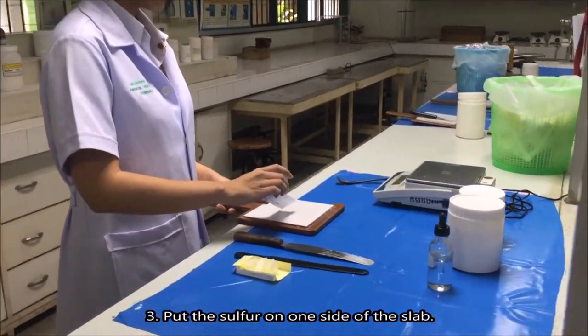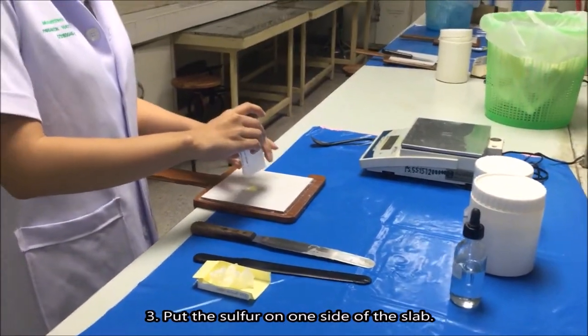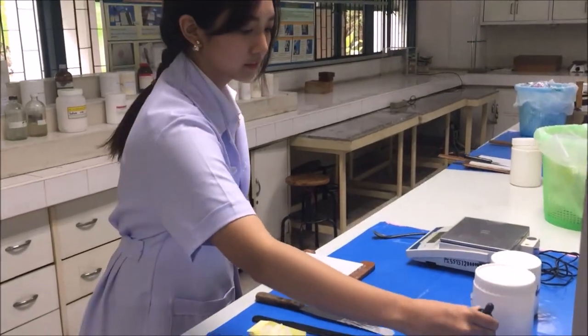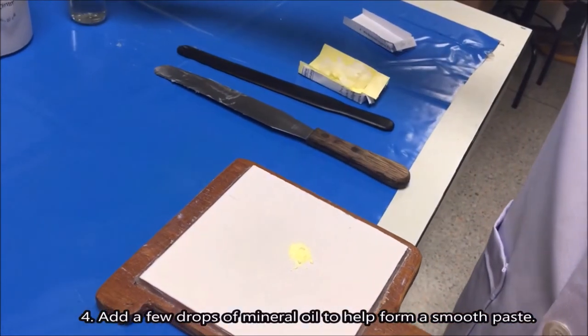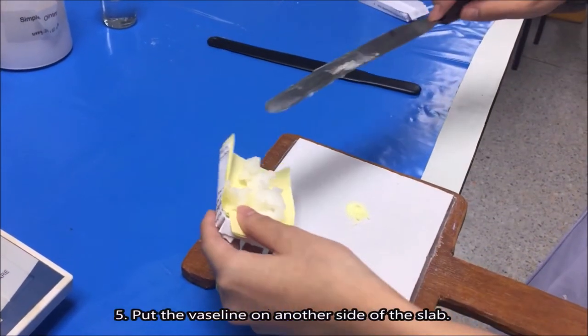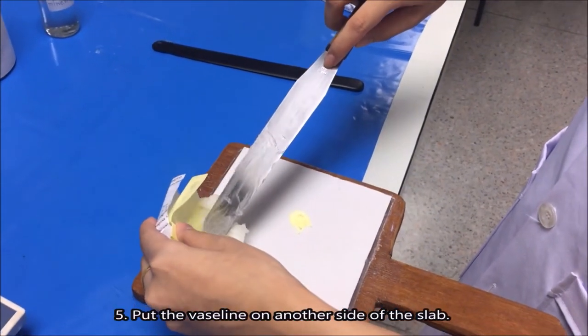Put the sulfur on one side of the slab. Add a few drops of mineral oil to help form a smooth paste. Put the vaseline on another side of the slab.